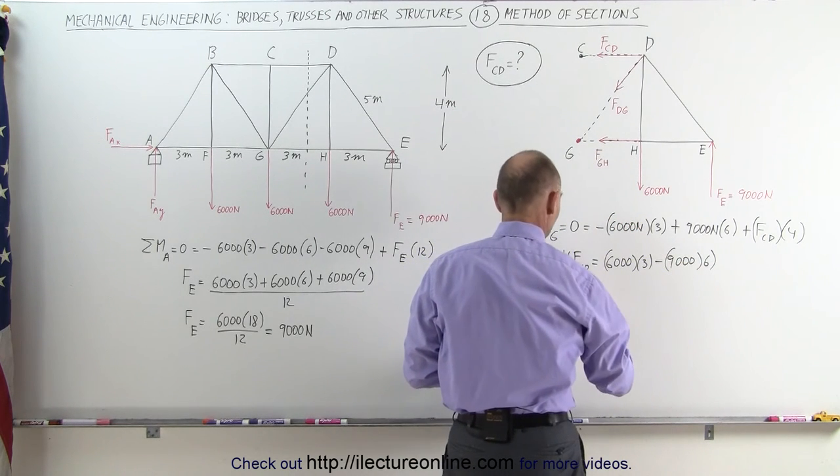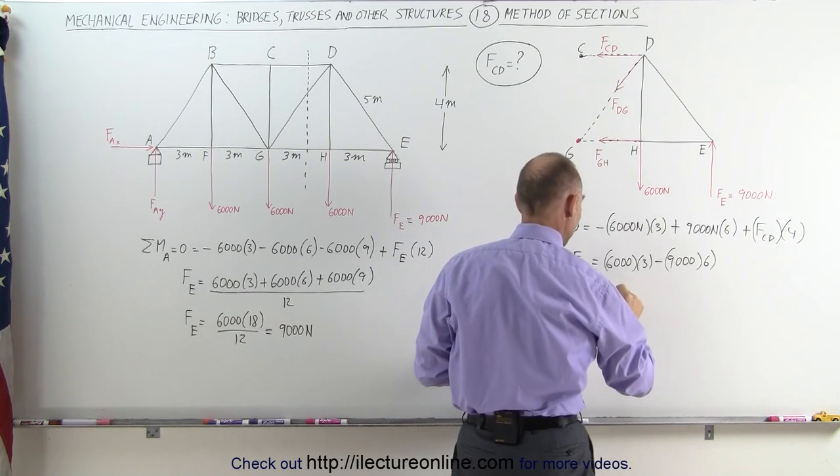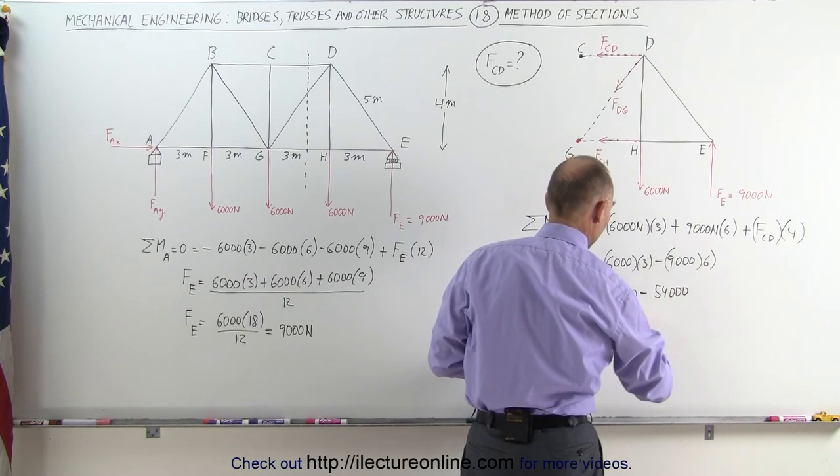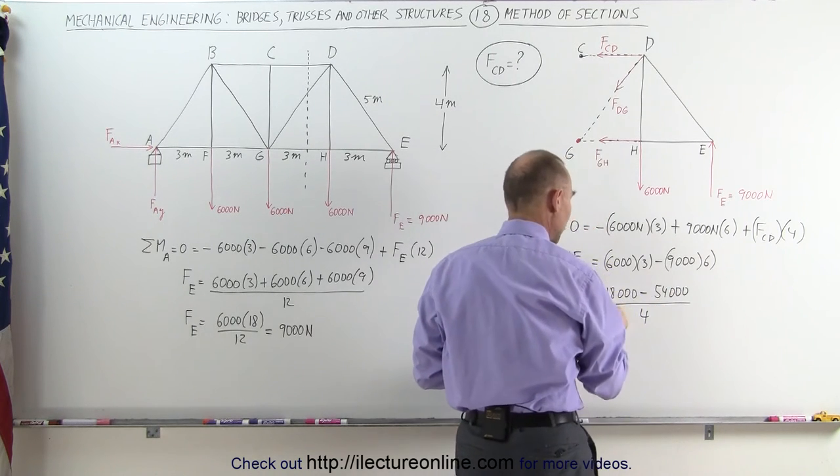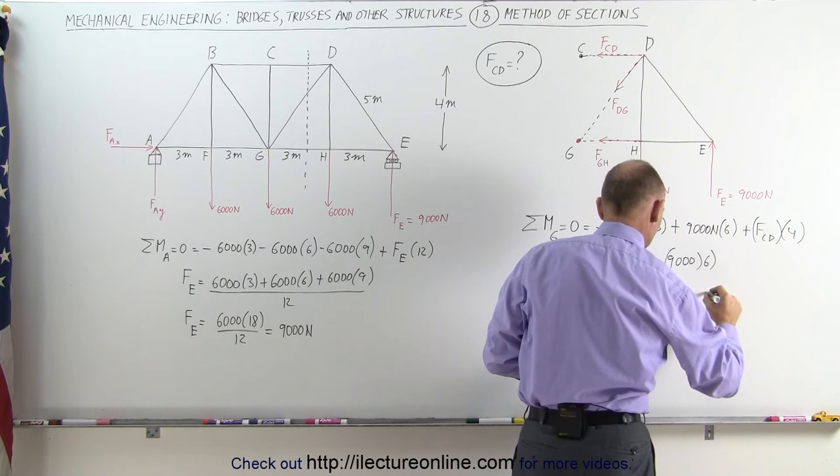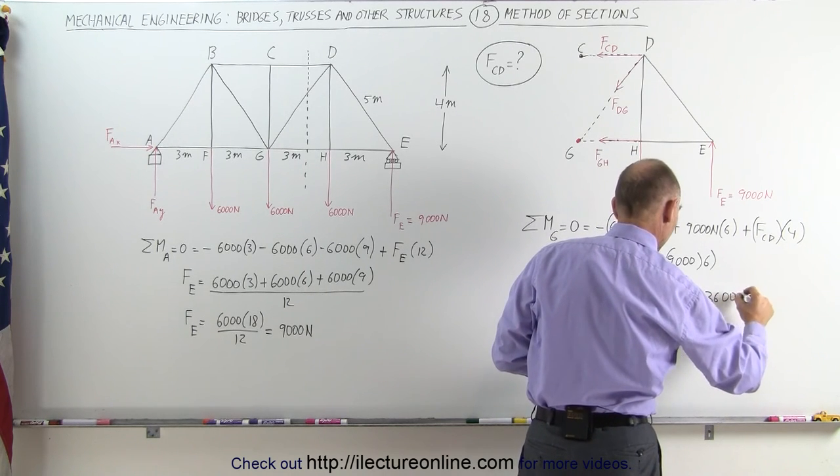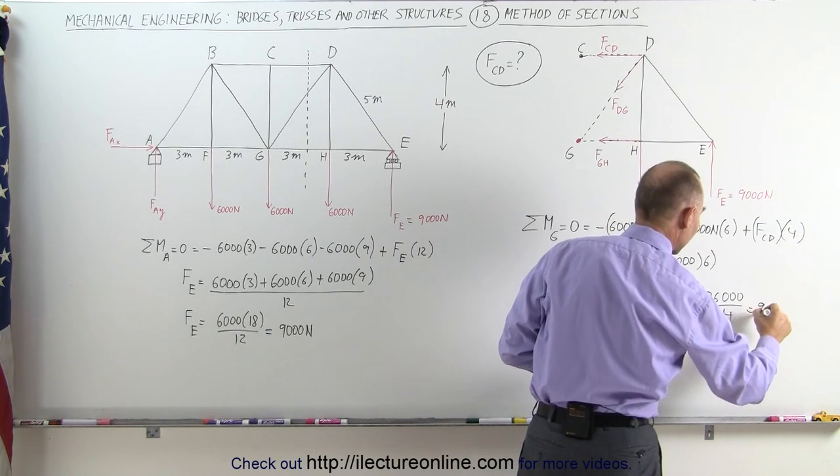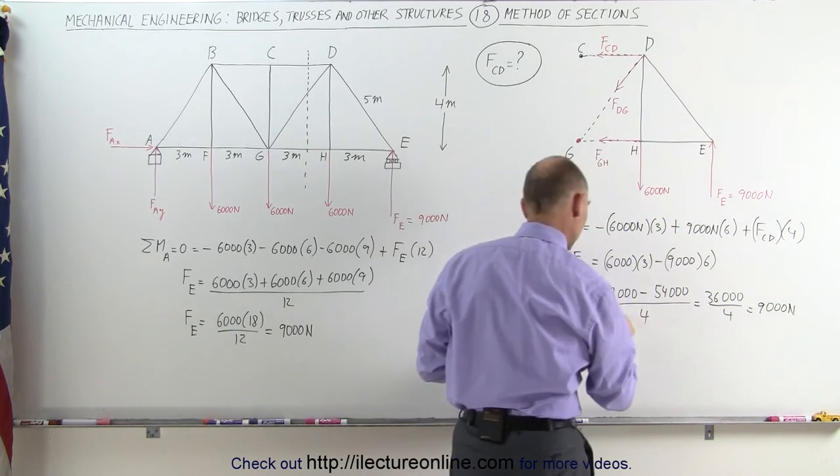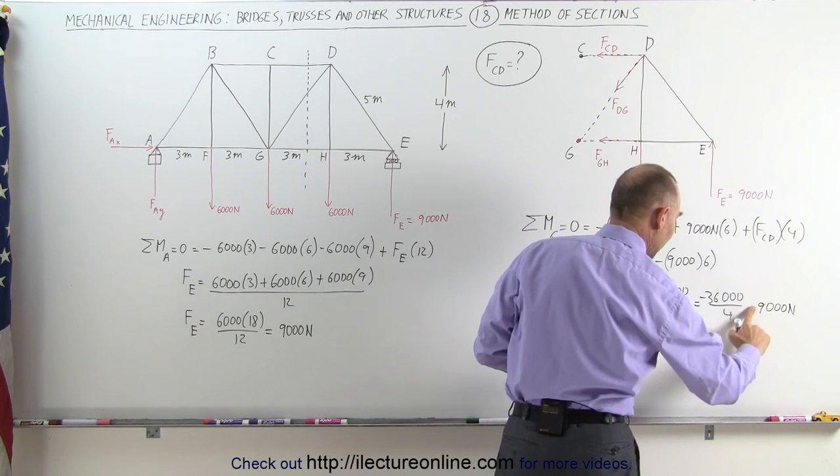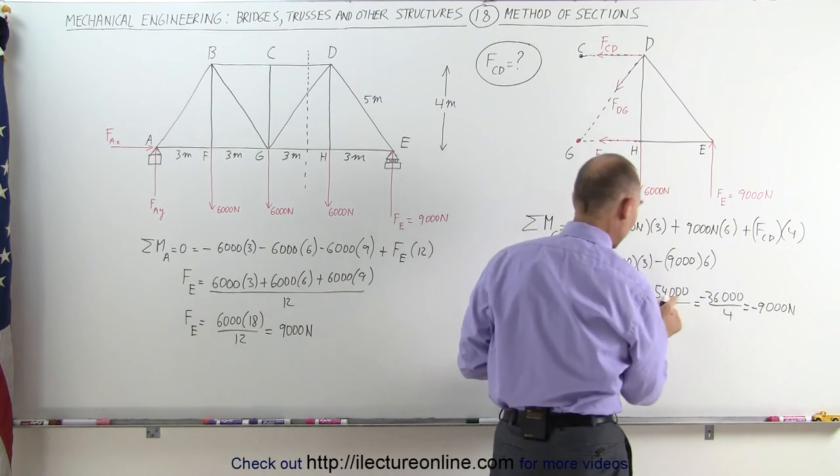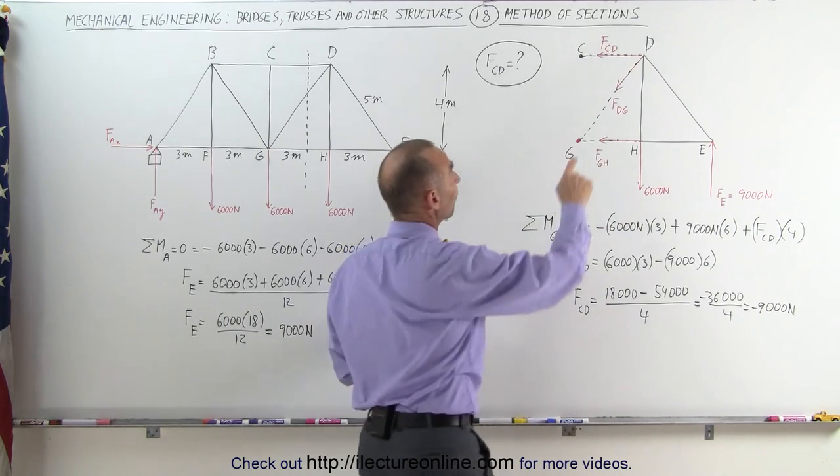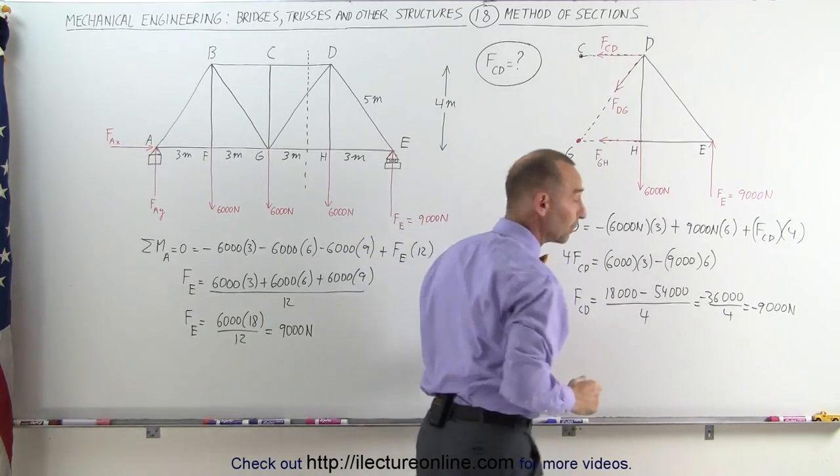And that means that FCD is equal to 18,000 minus 54,000 divided by 4. 18,000 minus 54,000 that would be 36,000 divided by 4 and 4 goes to 36, looks like 9 times, that's 9,000 newtons. And notice this should be a minus, this is negative so that's bigger than this. I get a minus 9,000 newtons which means that the force is actually in the opposite direction.